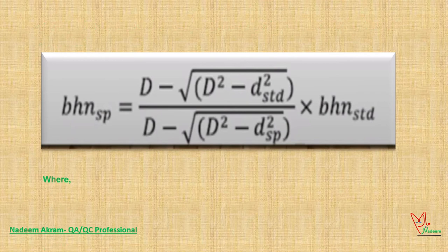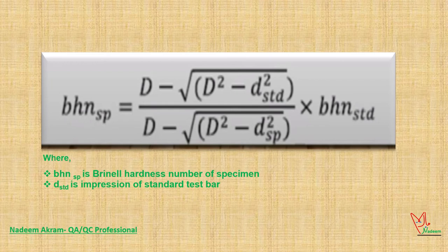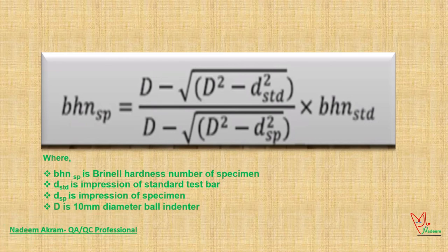BHN SP is Brinell hardness number of specimen. DSTD is impression of standard test bar. DSP is impression of specimen. D is 10 millimeters diameter ball indenter.